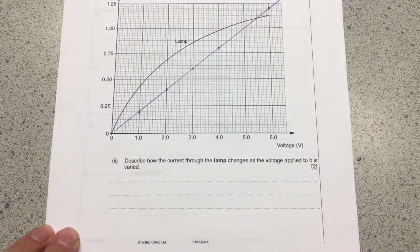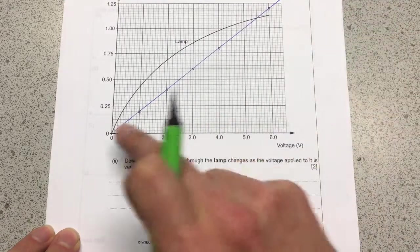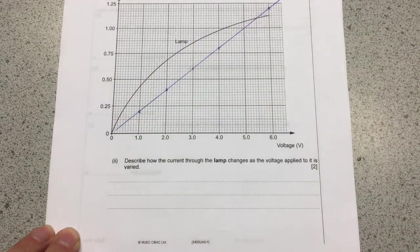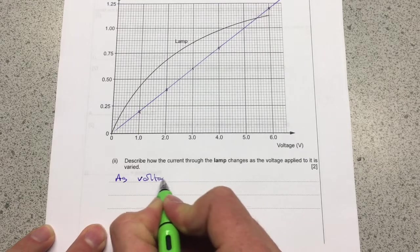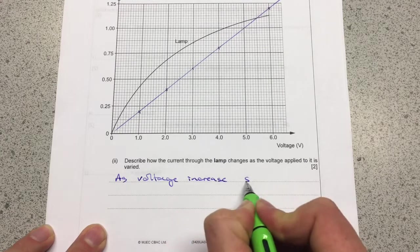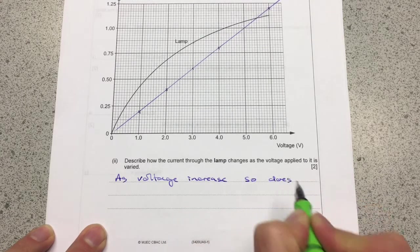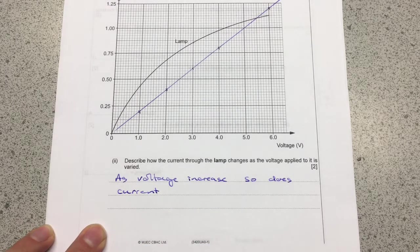Then it asks us to describe how the current through the lamp, so that's the curve. Be careful you've just drawn the resistor in, the curve of the lamp. So I'm going to say that as voltage increases so does current. Now that's what most people will say and they'll score one mark for that.